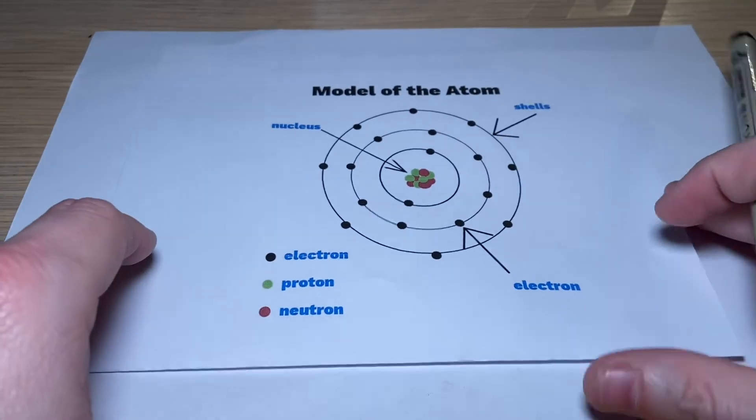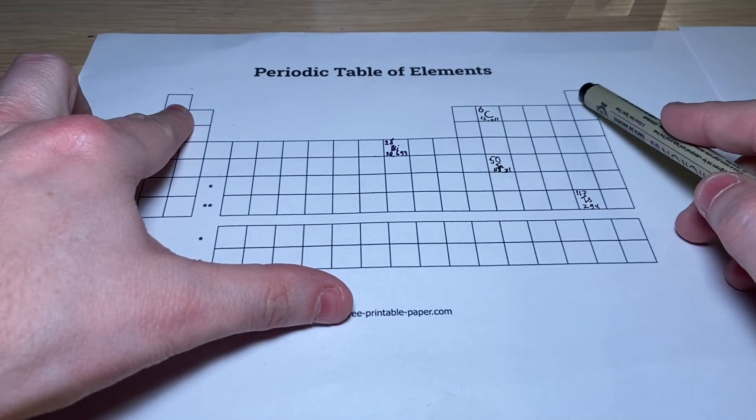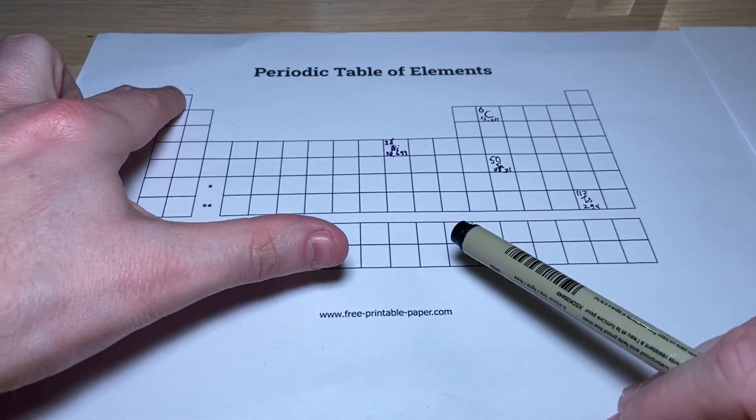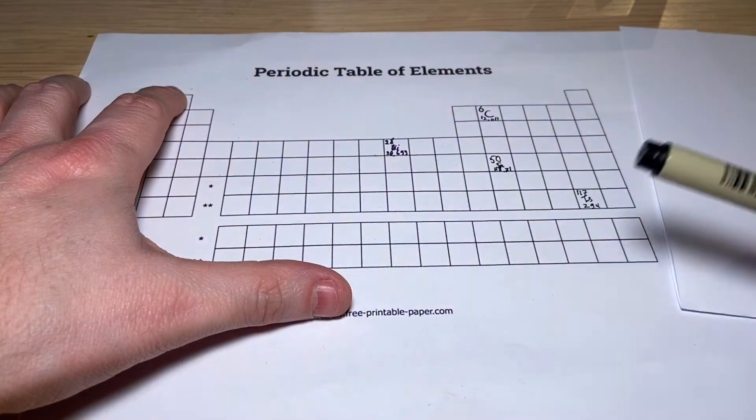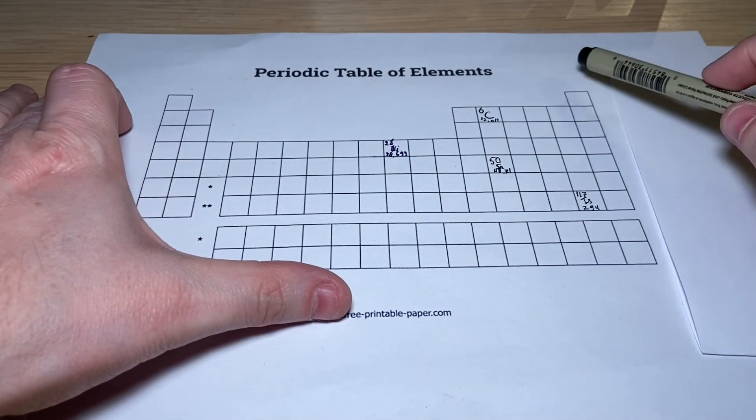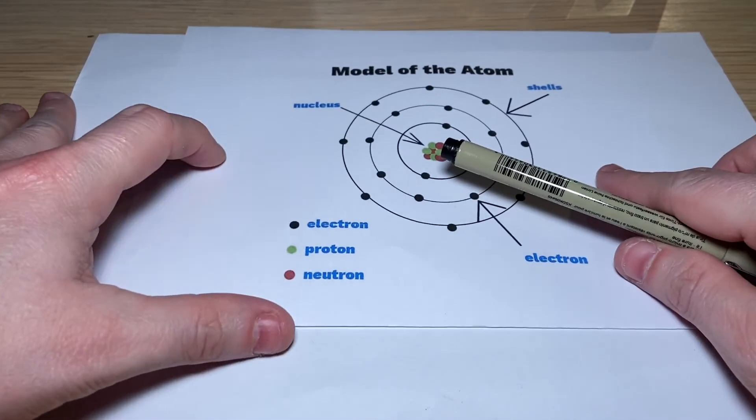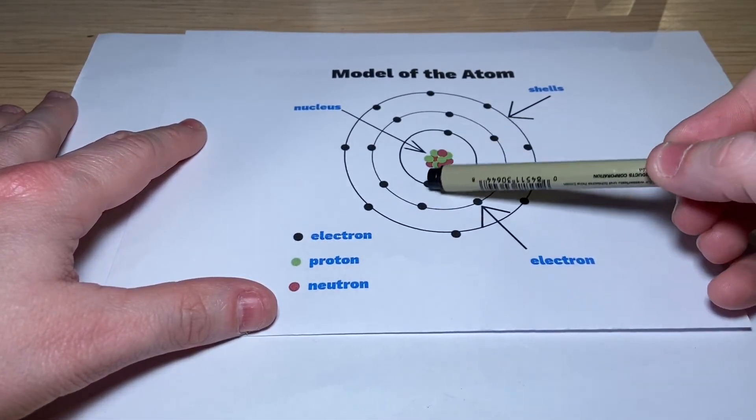If you go to the periodic system, the first element you will encounter is hydrogen, and the second one that you will encounter is helium. Now, hydrogen, since it is the first element, it will have one electron, right? And helium will have two electrons. Now, what happens if you look at the first shell? You can see that it basically has two electrons.